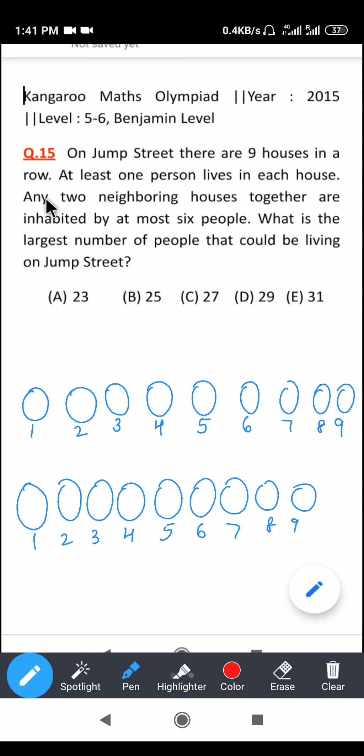Question number 15. The question reads as follows: On Jump Street there are nine houses in a row. At least one person lives in each house, so let's underline the important information.